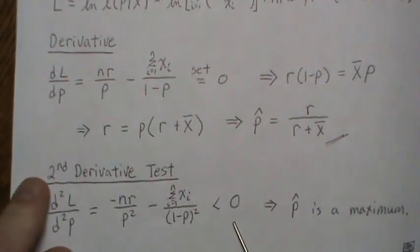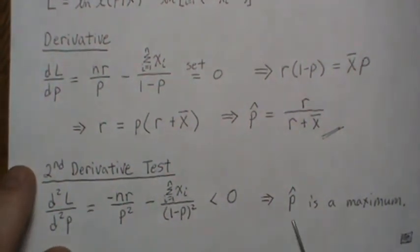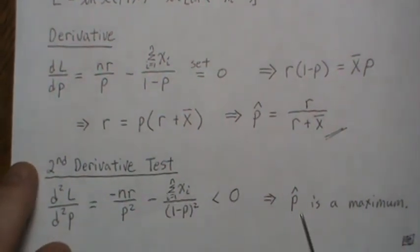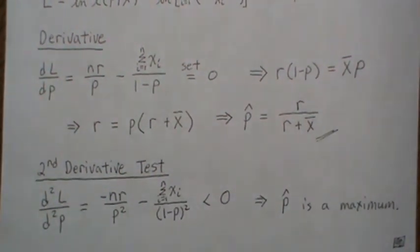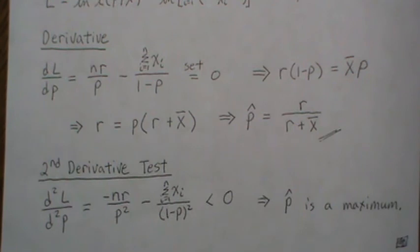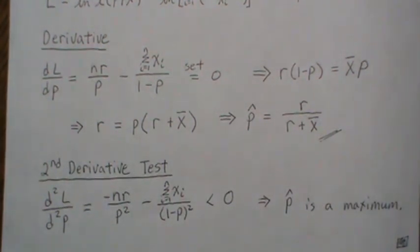So this whole thing is less than 0, which implies that P hat, our maximum likelihood estimate, is indeed a maximum. Well, that's all I have for today. Hopefully you enjoyed that. I sure did. Please like the video and subscribe so you don't miss the next one. Thanks. Bye.